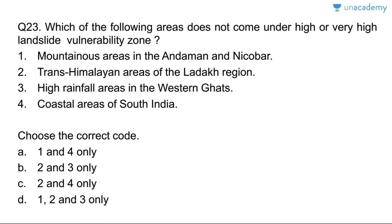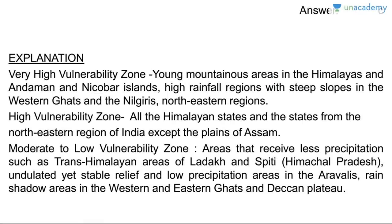Question twenty-three: which areas do not come under high or very high landslide vulnerability zones? Trans-Himalayan areas of Ladakh — no, that is moderate to low. High rainfall areas in the Western Ghats — yes, these do come under very high. Coastal areas of south India — these do not. Answer is B, two and three. Very high zones include the Himalayas and Andaman & Nicobar. Moderate to low zones include trans-Himalayan areas of Ladakh and Spiti.